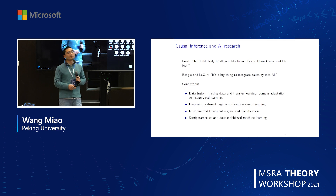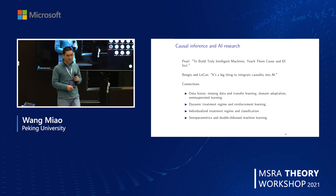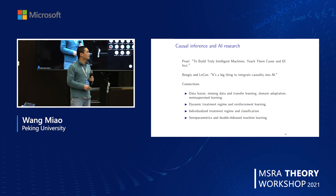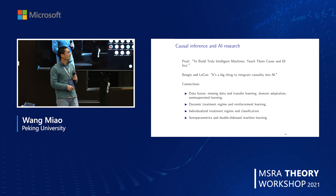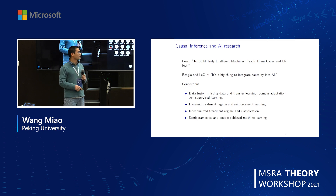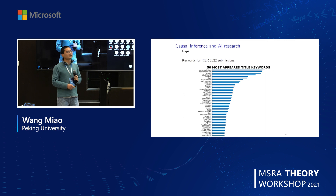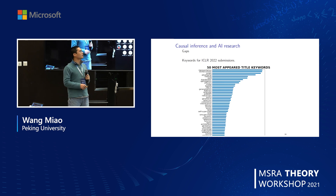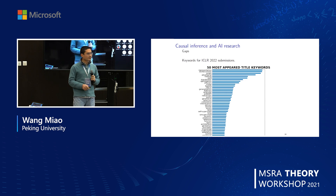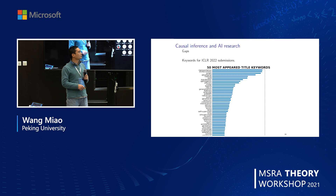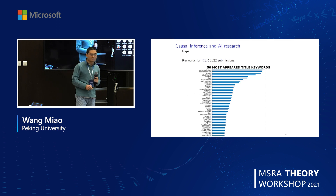People are also interested in the integration of causal inference and AI or machine learning, and at several points they are very closely connected. Data missing and transfer learning, domain adaptation, and semi-supervised learning are closely related. Dynamic treatment regimes and reinforcement learning, individualized treatment regimes and classification, semiparametrics and double machine learning — they are all closely related. However, there are still big gaps between causal inference and machine learning. A graph showing keywords for recent ICLR submissions suggests that very few are related to causal inference.